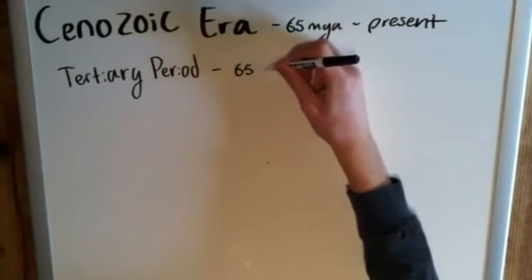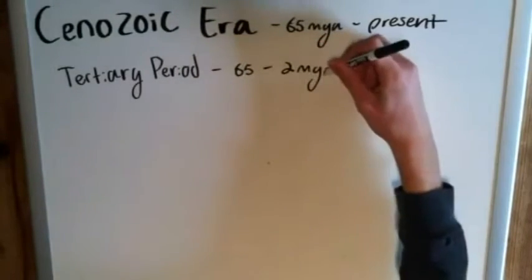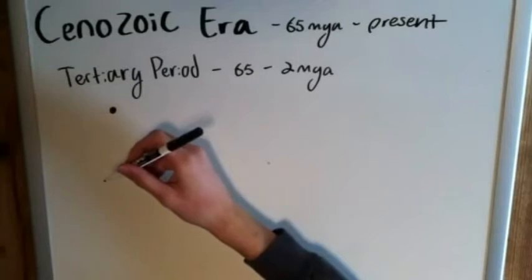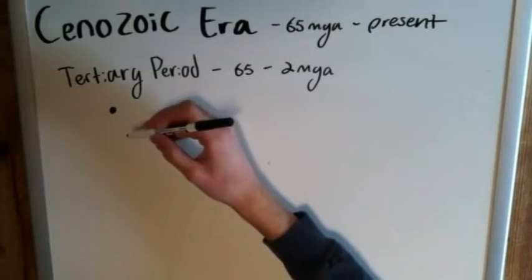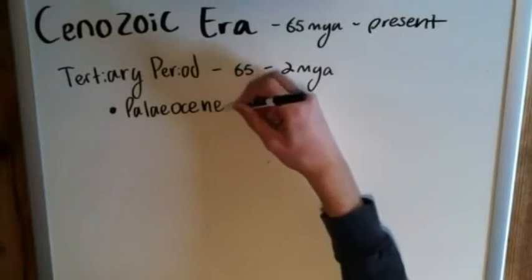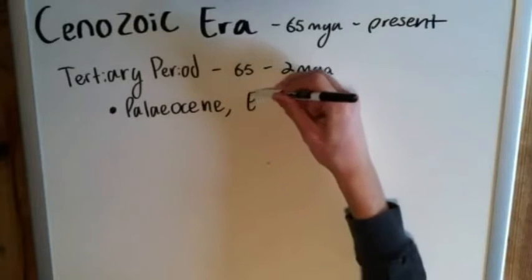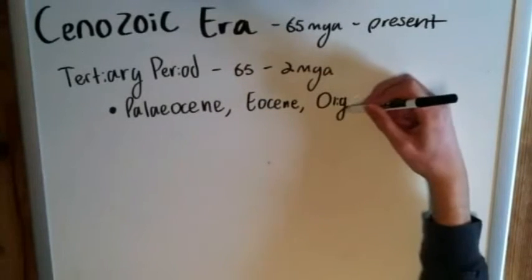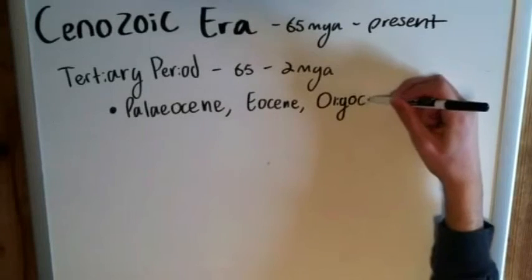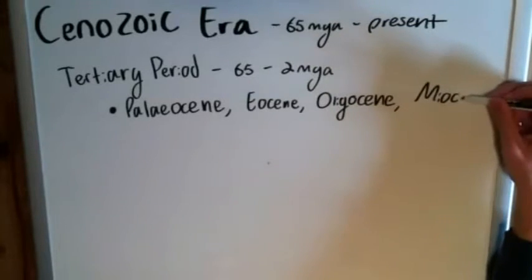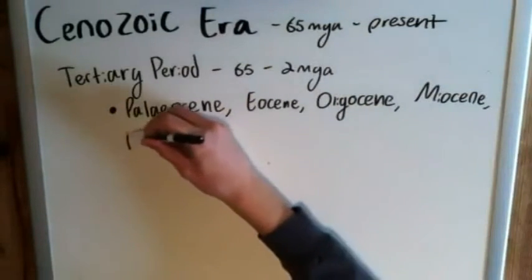The Tertiary Period ran from the beginning of the Cenozoic Era, 65 million years ago, through 2 million years ago. It is divided into five epochs: the Paleocene, Eocene, Oligocene, Miocene, and finally the Pliocene.